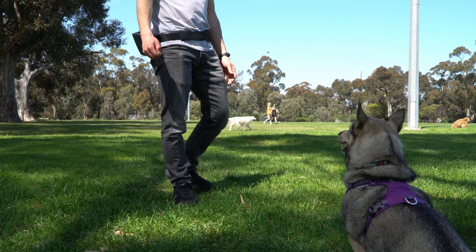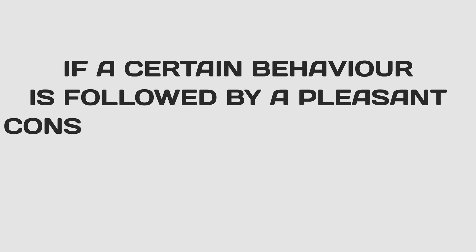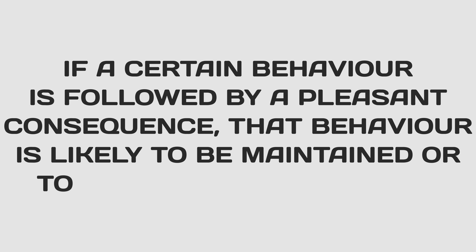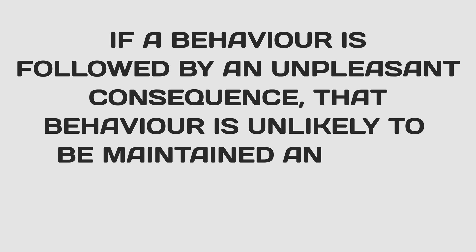Today we talk about these two incredibly useful and helpful concepts: operant and classical conditioning. Let me start by saying that distinguishing between them is something we do mostly to make them easier to understand — in reality they often go together, but more on that later. When we are talking about operant conditioning, we are referring to using consequences to shape behavior. The theory of operant conditioning was proposed by American psychologist B.F. Skinner. In a nutshell, if a certain behavior is followed by a pleasant consequence, that behavior is likely to be maintained or to increase in the future.